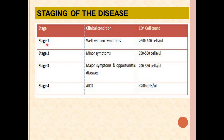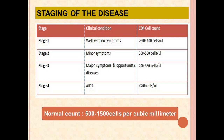The staging of this disease: Stage 1 is asymptomatic, where the CD4 cell count reduces to 500–600 cells. Stage 2 shows minor symptoms with a cell count of 350–500 cells per microliter. Stage 3 shows major symptoms and opportunistic diseases with a cell count of 200–300 cells. Stage 4 is AIDS, where the cell count is less than 200 cells. The normal CD4 count is 500–1500 cells per cubic millimeter.